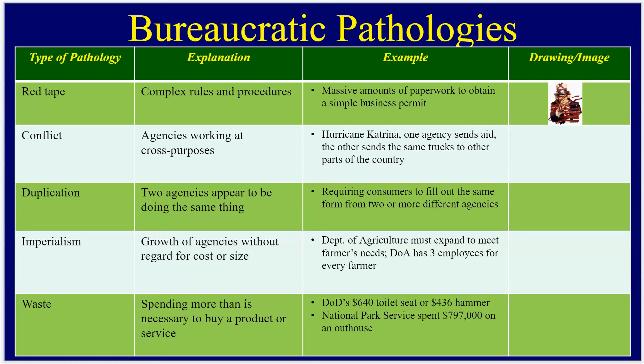Let's talk about bureaucratic pathologies — the problems of the bureaucracy. There are five main ones. First is red tape: all kinds of paperwork, policies, procedures, and rules. The Administrative Procedure Act constraints, open meetings, public comment periods — all of these things slow down the process and keep government from moving quickly. Before an agency can even propose a rulemaking, there are extensive requirements that have to be carried out and shared with the public.